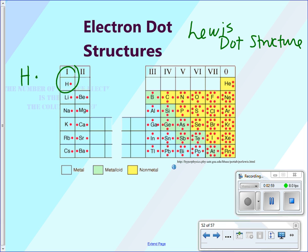I write it in a counterclockwise motion. For example, if I was writing out carbon — carbon is in energy level 2, and in that outermost energy level we've got 2 in the s orbital and 2 in the p orbital, so 4 total. I write 1, 2, 3, 4. If I had something with 6, say oxygen, which has 6 valence electrons, I would write that as 1, 2, 3, 4, 5, 6.